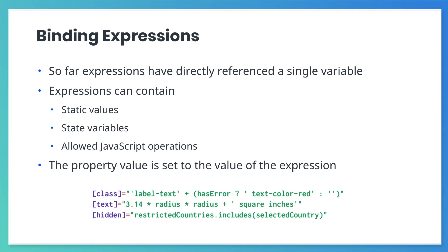Here are three examples of binding expressions. In the first example, we're changing the value of a class attribute — one class is always applied, and the other is conditionally applied. In the second example, we're setting the text of this component to the area of a circle using the radius state variable. And in the final example, we're using one of the allowed JavaScript operators for arrays — the component is hidden if the value is in the list of disallowed values.